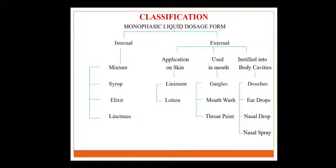Monophasic liquid dosage forms are classified into two groups: liquids for internal administration and liquids for external application. Internal administration examples include mixtures, syrup, elixir, and linctuses. External applications are further classified into three types: applications on the skin such as liniment and lotion; those used in the mouth or buccal cavity such as gargles, mouthwash, and throat paints; and those instilled into body cavities such as douche, ear drops, nasal drops, and nasal sprays.